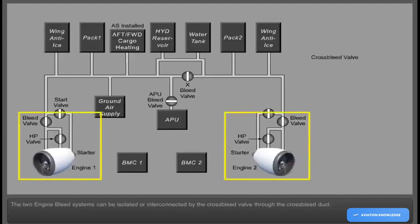The two engine bleed systems can be isolated or interconnected by the cross-bleed valve through the cross-bleed duct.